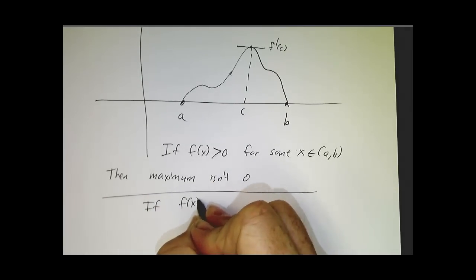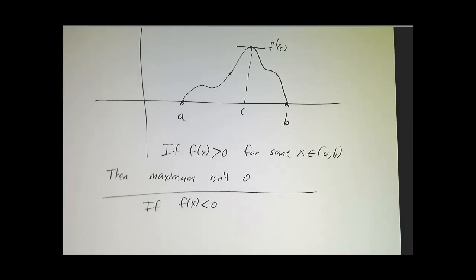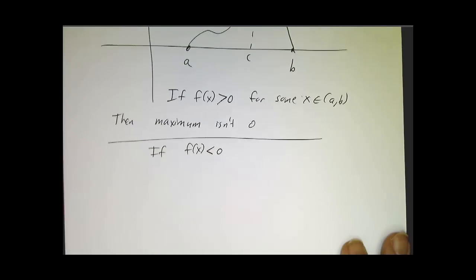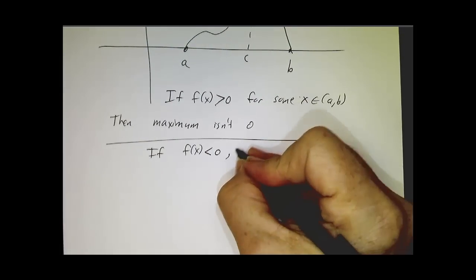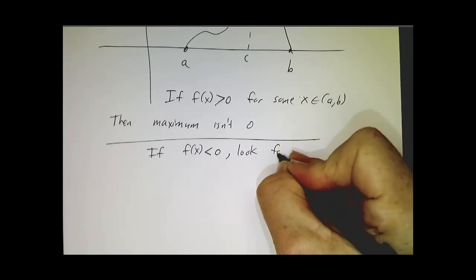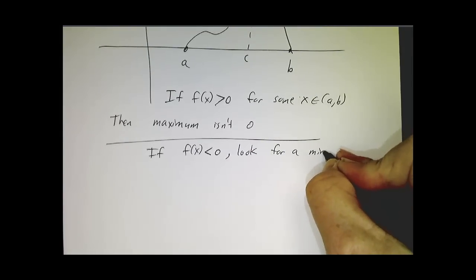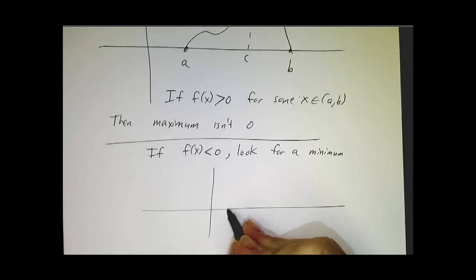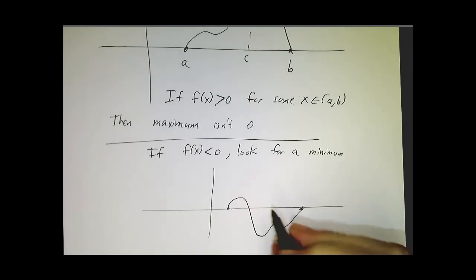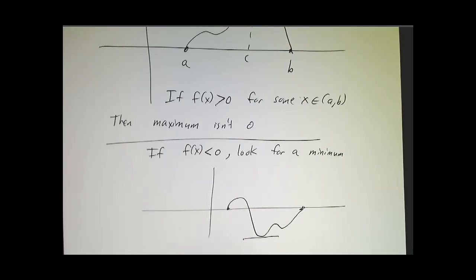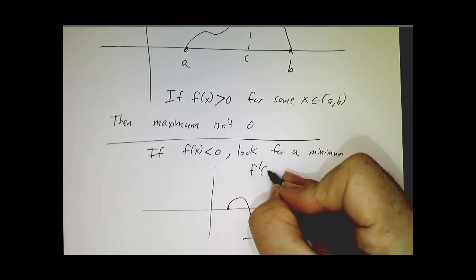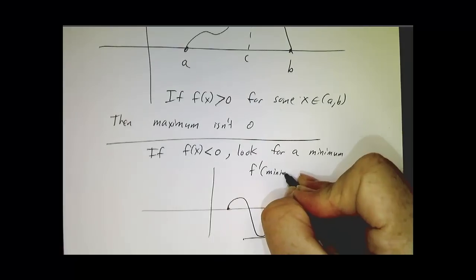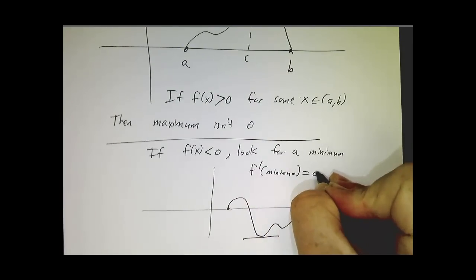If the function ever goes negative, we can do the same thing for a minimum. If the function ever goes negative, maybe it goes positive and then goes negative. If it ever goes negative, the minimum isn't zero. f' at the minimum has got to be zero.